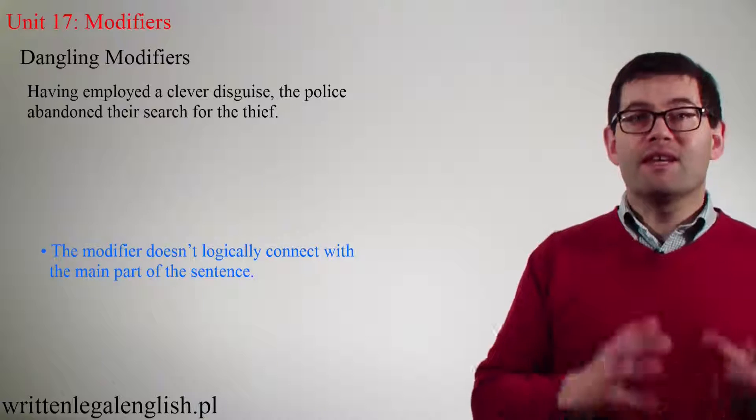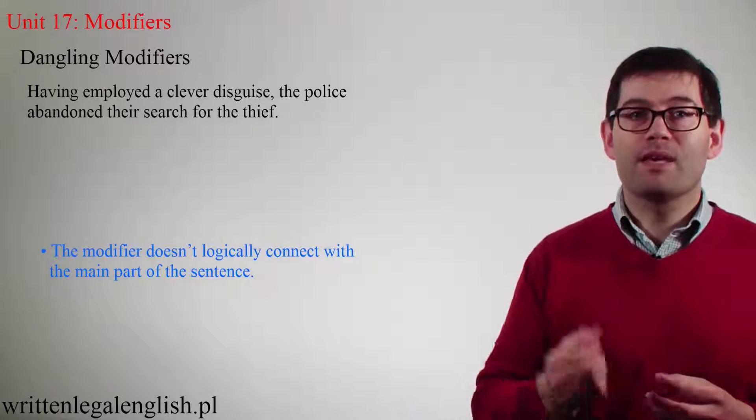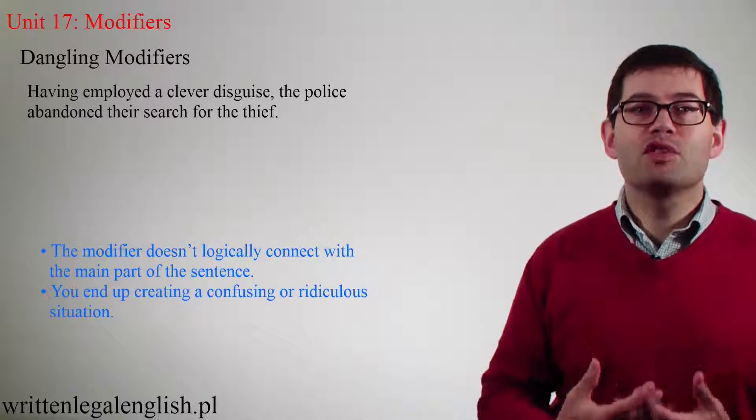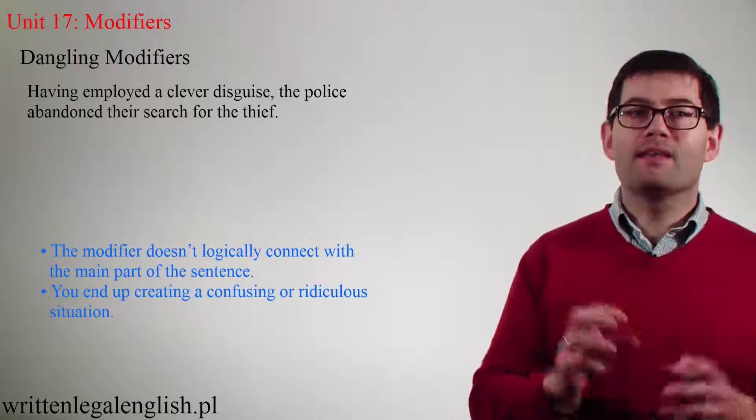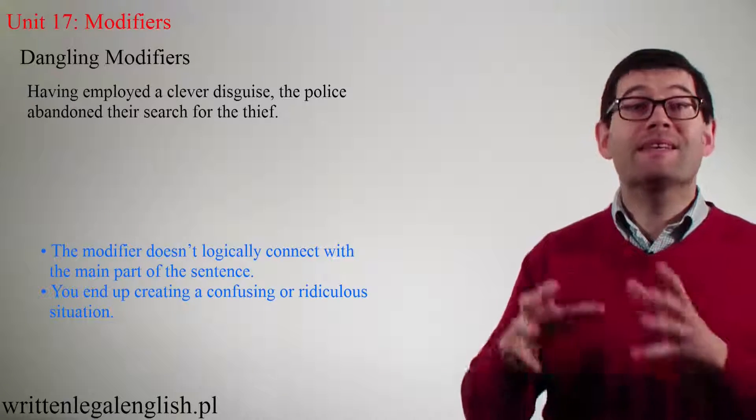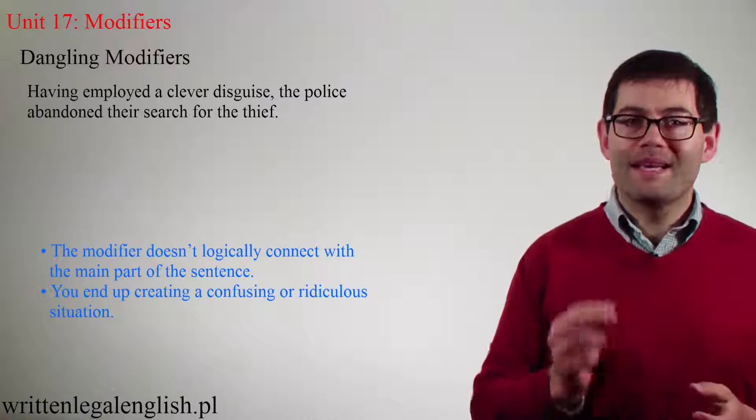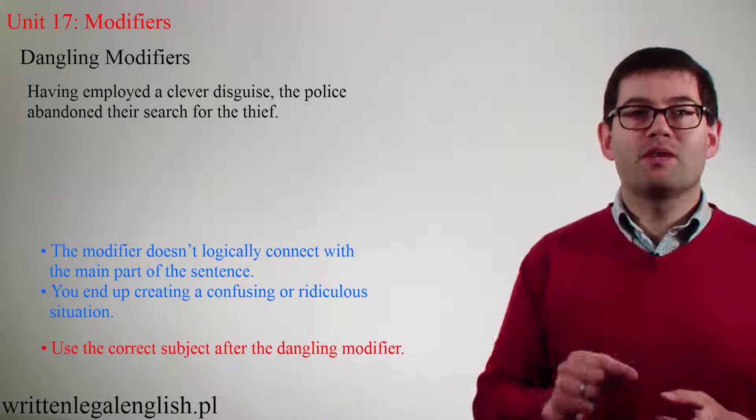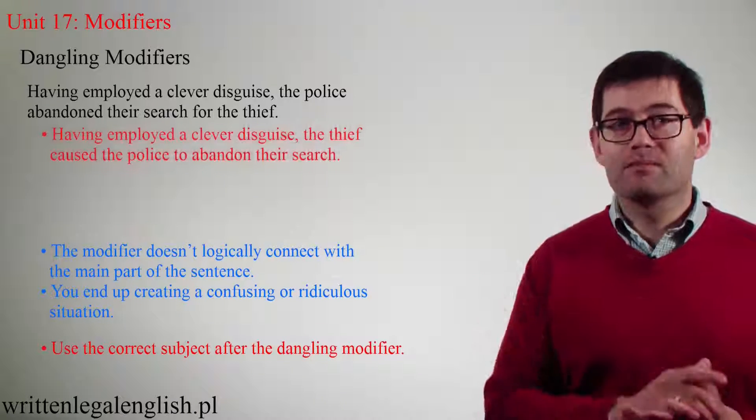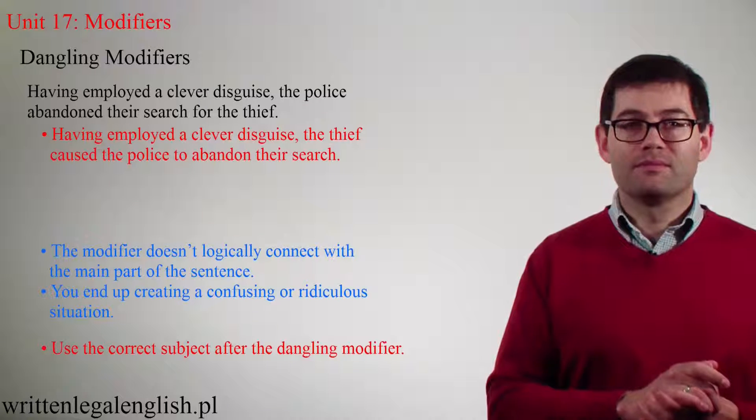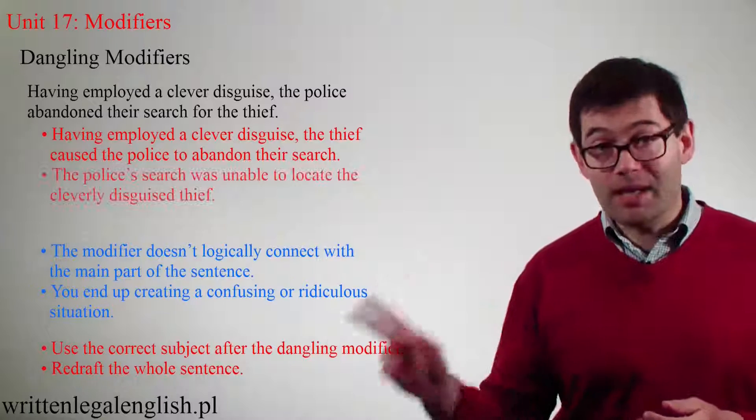So what's the problem? The dangling modifier needs to logically connect to the correct subject. If it doesn't, you end up creating a confusing or ridiculous situation. I'll just note here that the dangling modifier can appear at the end of a sentence as well. What's the solution? As mentioned, use the correct subject after the dangling modifier. We can see that here. A second solution would be to redraft the whole sentence, which you can see here.